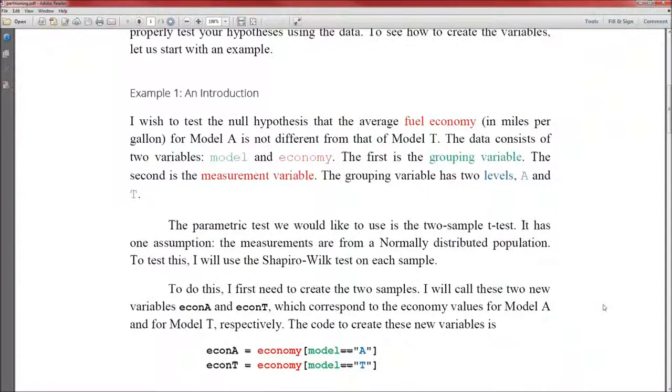So let's look at example 1. I wish to test the null hypothesis that the average fuel economy for model A is not different from that of model T. The data consists of just two variables, model and economy. The first is the grouping variable, and the second is the measurement variable. The grouping variable has two levels, A and T, corresponding to two models.